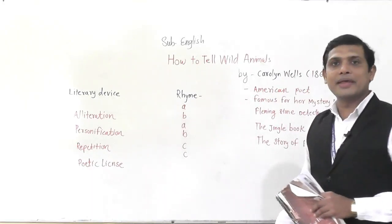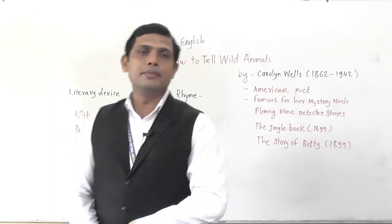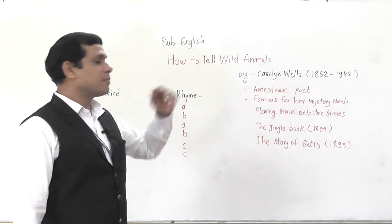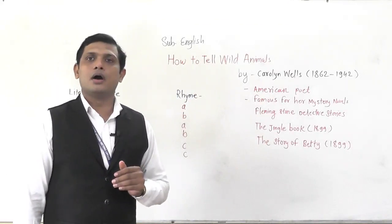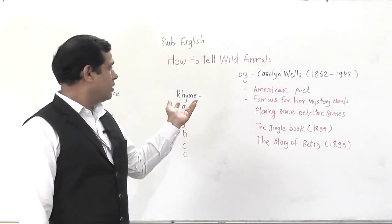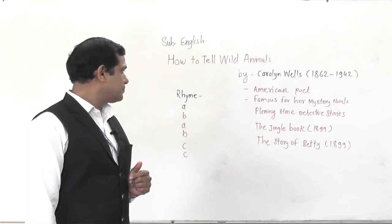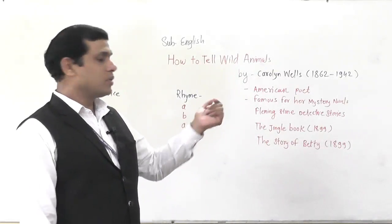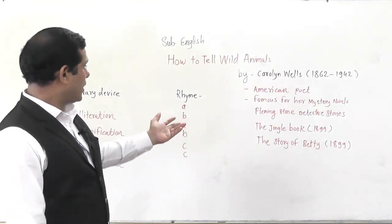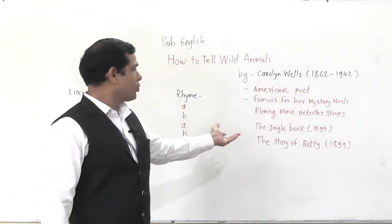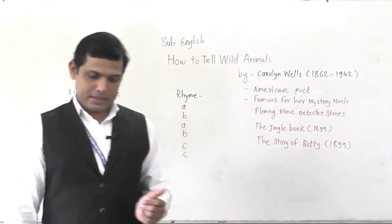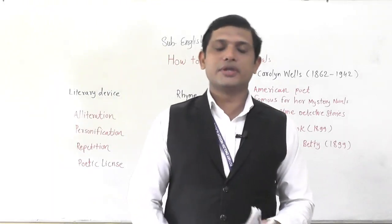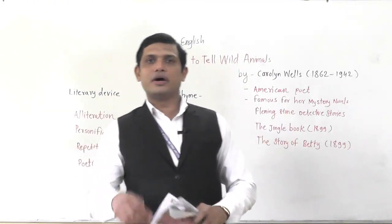Caroline Wells is an American poet. She is famous for her mystery novels and detective stories. She has written 'The Jingle Book' in 1899 and another story 'The Story of Betty' in 1899. So mostly she is famous for mysterious books, and today we are going to learn her poem 'How to Tell Wild Animals.'